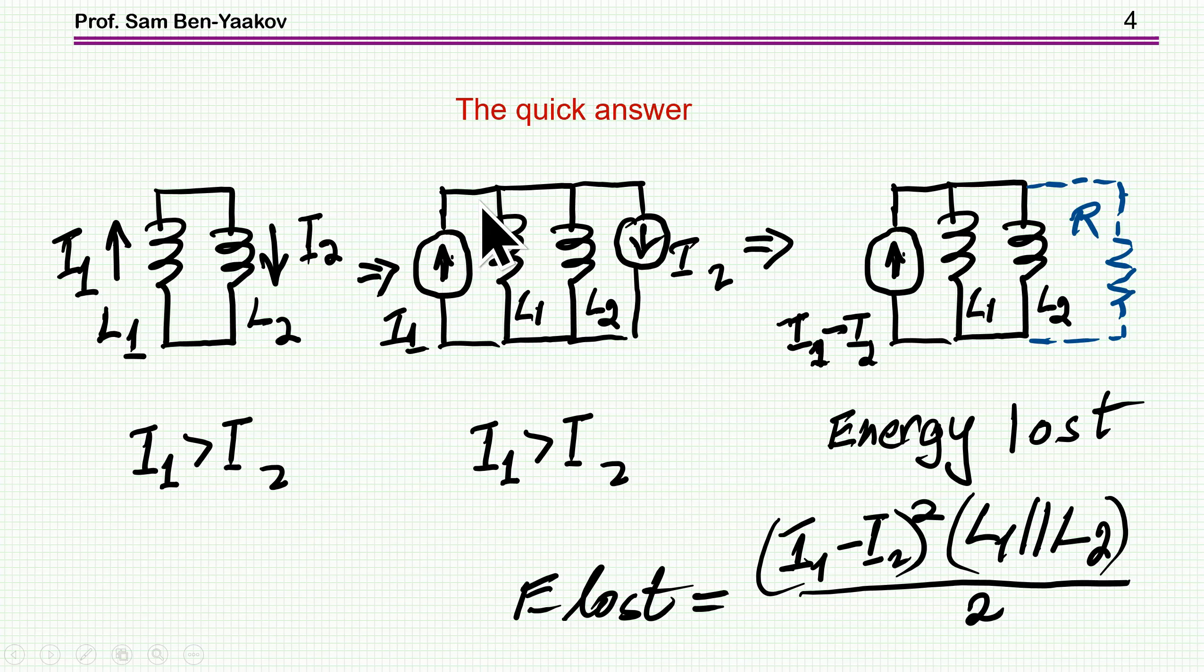Now, the quick and intuitive answer to the loss of energy can be derived in a very simple way like this. We start with two inductors connected with different current. Now, what I'm going to do is represent each one of the inductors as an inductor without any current plus a current source. This representation is for an inductor with a current in it. Same thing, it's an equivalent circuit. So here is one, and here is another one, and this is the case in which the currents are following one the other.